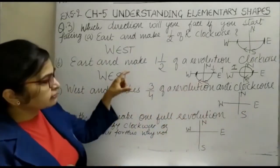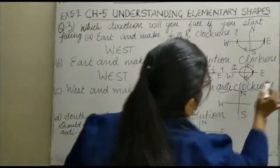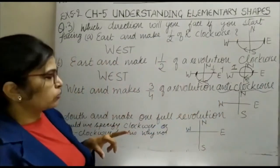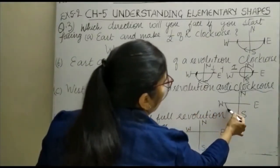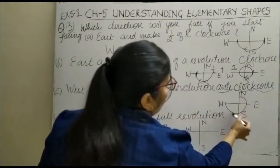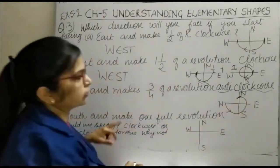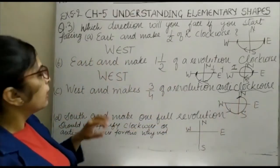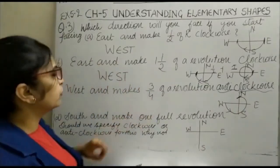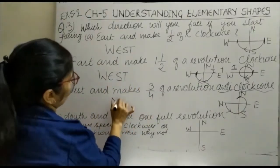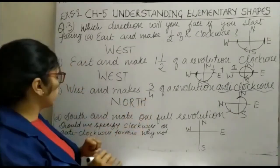You are at west and make three-fourths of a revolution. Here we check that our direction is anticlockwise — anticlockwise is this direction. One-fourth, one-fourth, and one-fourth — so we will be at north in the anticlockwise direction. Starting from west and covering three-fourths of a revolution, the direction will be north.